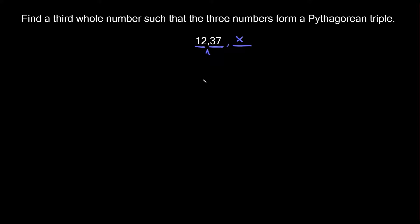Remember, for three numbers to form a Pythagorean triple they have to satisfy the Pythagorean theorem which is a² + b² = c².